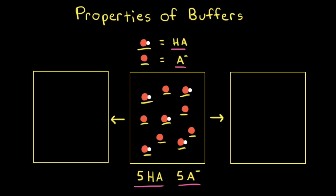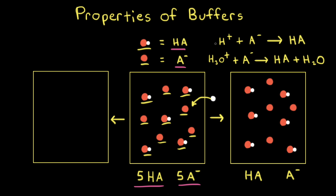Let's see what happens to the buffer solution if we add in a small amount of acid. Here I'm drawing in an H+ ion — let's think about adding this H+ ion to our buffer solution. When the H+ ion is added to the solution, the base that is present will react with the H+ ion to neutralize it. So the added H+ reacts with A- to form HA.